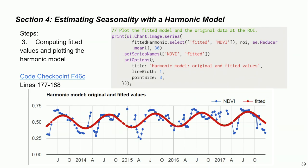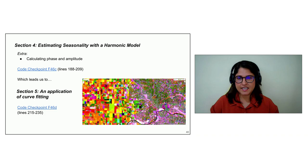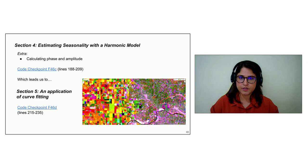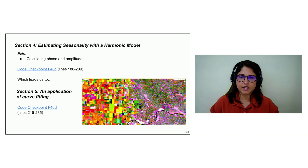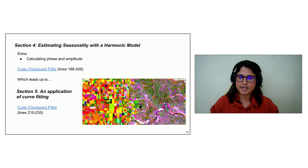There's an extra step in this section: calculating phase and amplitude. Phase and amplitude provide additional information — for example, agricultural crops with different phenological cycles can be distinguished using phase and amplitude, something not possible with spectral information alone. This leads into section five, an application of curve fitting, where we look at the resulting image as a whole rather than a single point. The resulting image reveals rich landscape variability in Modesto, California — showing differences between crop types, urban, and natural areas.